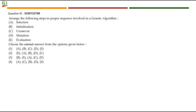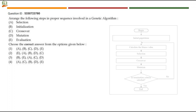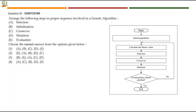Next question: arrange the following steps in proper sequence involved in a genetic algorithm. We have already seen genetic algorithm phases in numerous previous year question papers. The first step will be initial population, which can be equated to initialization because you are choosing an initial population for this process. At the initial population stage, we are calculating the fitness value of those individuals. This fitness value calculation can be equated to evaluation — evaluating the fitness value — and this will be option E.